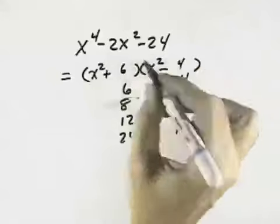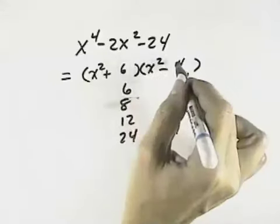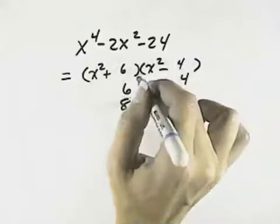If we try the 6 with the 4, we see that we get a positive 6x squared in the middle, negative 4x squared on the outside, it's a positive 2x squared.